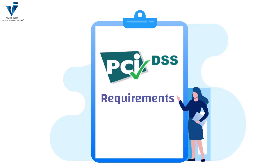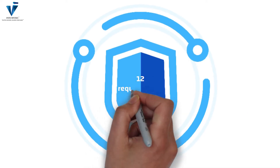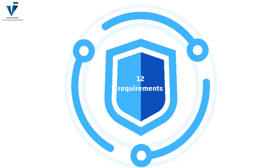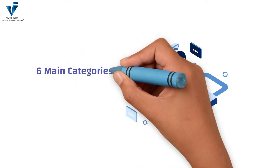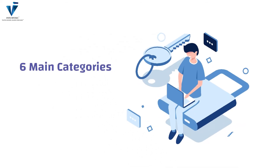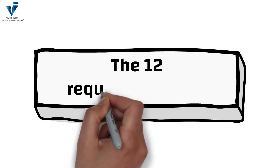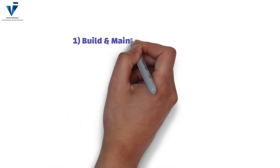PCI DSS compliance comprises 12 requirements as outlined by the PCI Council. These 12 requirements are divided into six main categories of PCI DSS compliance. Let us understand what these 12 requirements are.